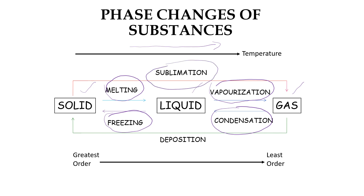We can also transform solid to gas directly by sublimation, and gas can directly transform to solid by deposition. Solid has the greatest order because particles are closely packed together, giving it a definite volume and shape. Liquid has a definite volume but no definite shape, while gas has both indefinite volume and shape.